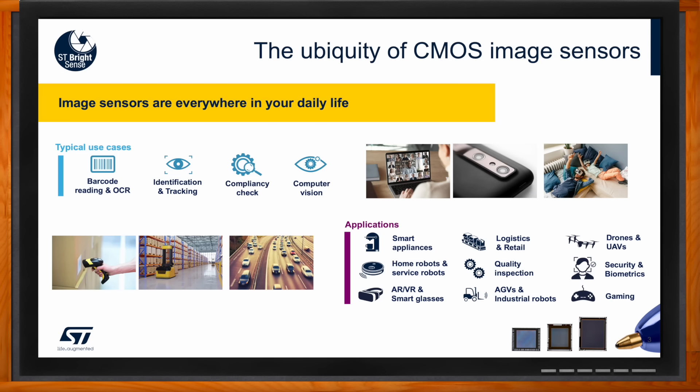In the field of AR/VR — augmented reality — global shutters improve the experience by capturing fast movements very smoothly, which is key for creating a realistic environment. You can also find global shutters in security for face recognition and identification. They help cameras take really clear pictures even when something is moving quickly or in low light. There are many, many applications and markets for global shutters.